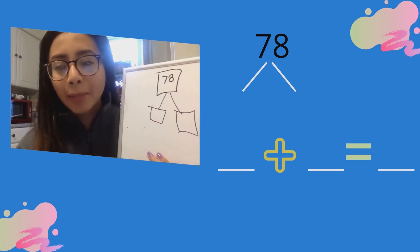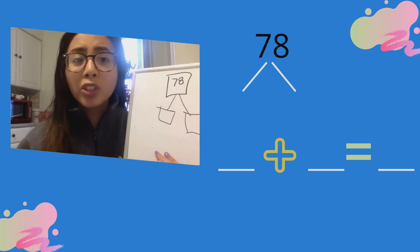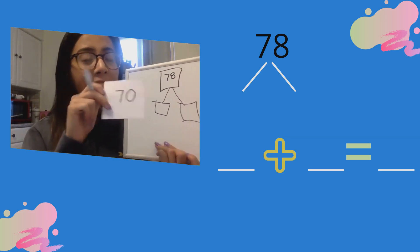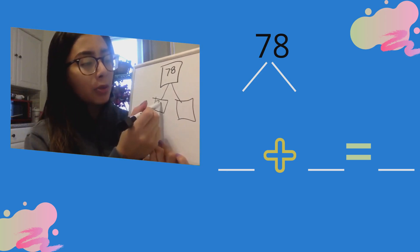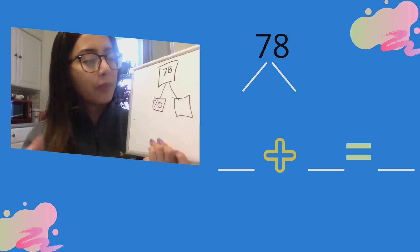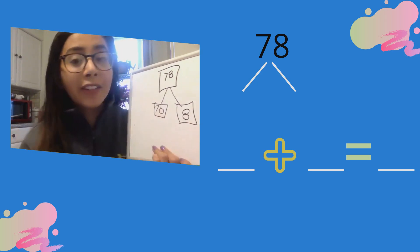That will show me my tens and my ones. So remember, we just broke this number apart and we saw that seven tens or 70 is one of the parts and our second part was our ones, eight.